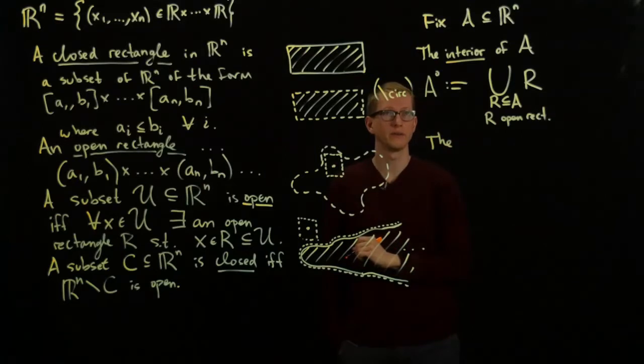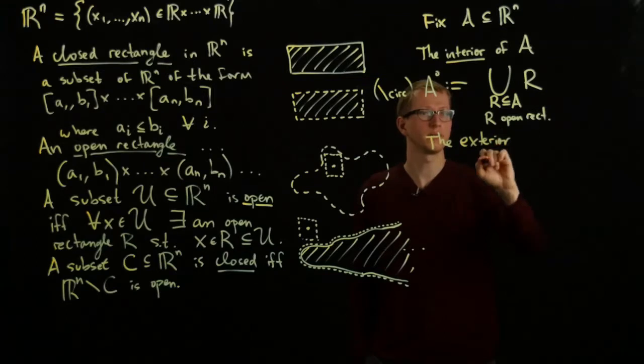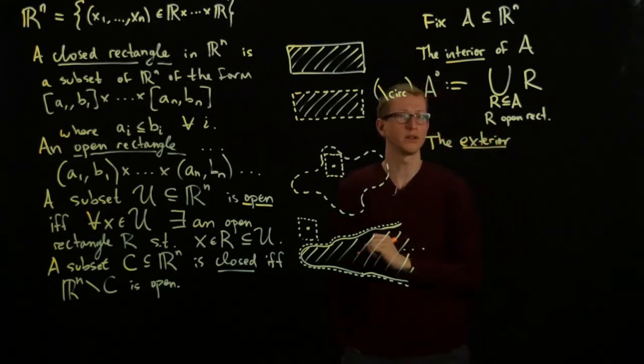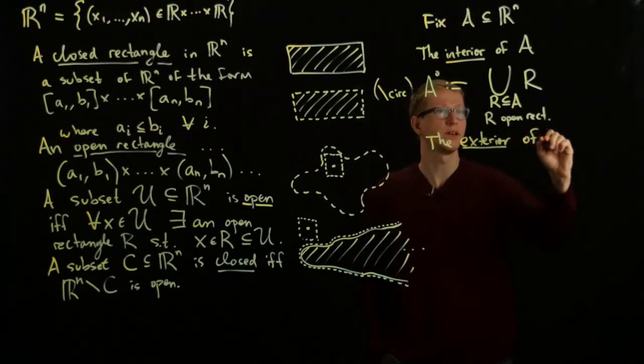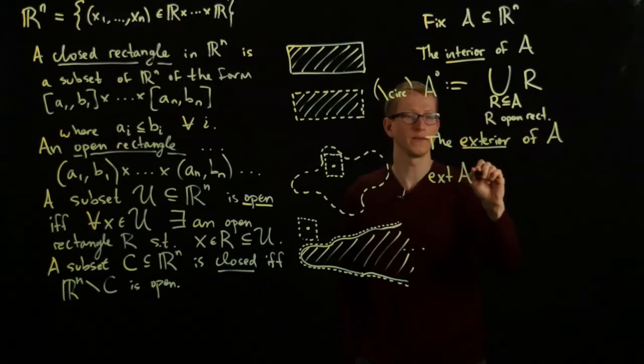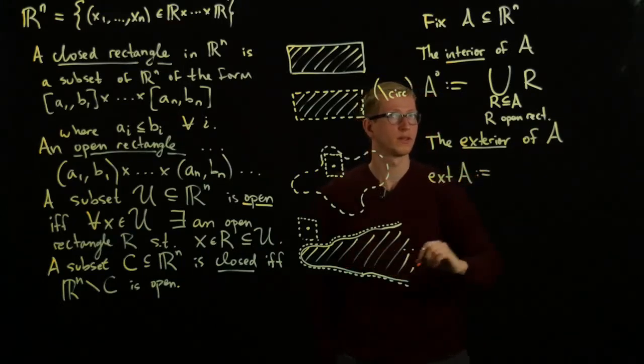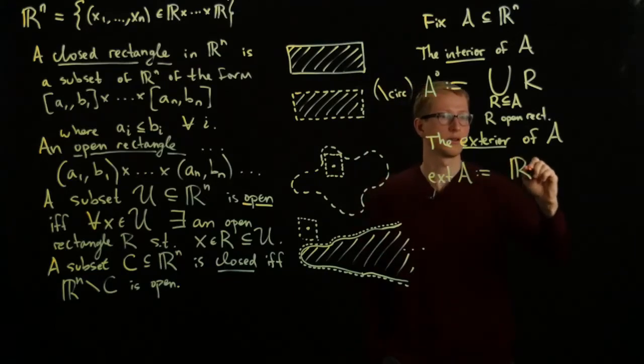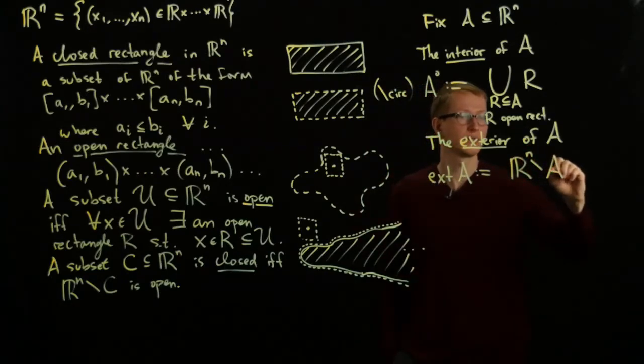Now, the exterior, this is something that we probably didn't learn about in ordinary real line, of A is the following. The exterior of A is the interior of the complement of A.